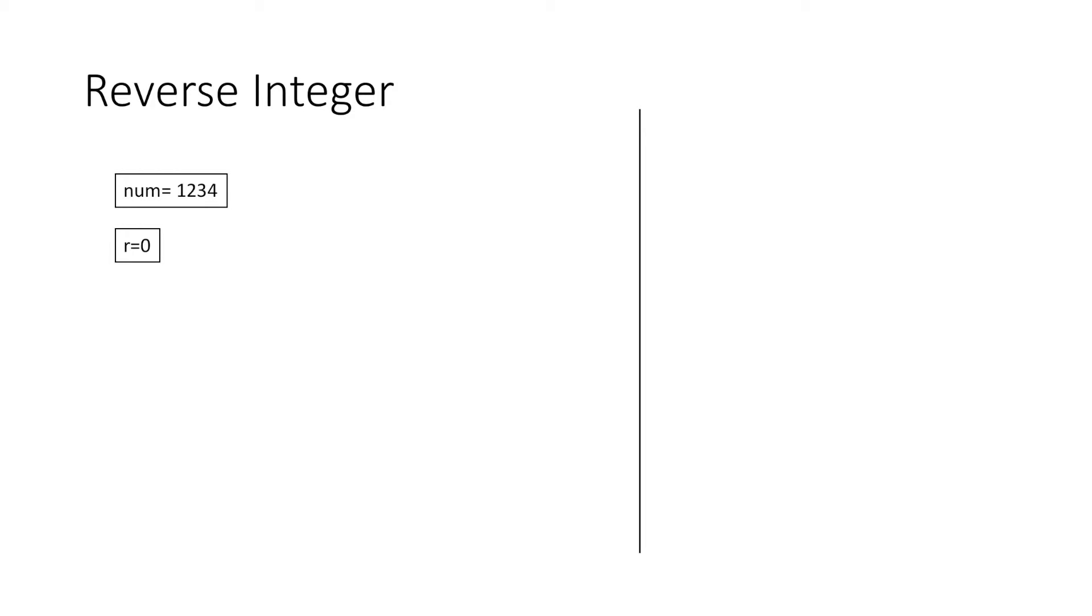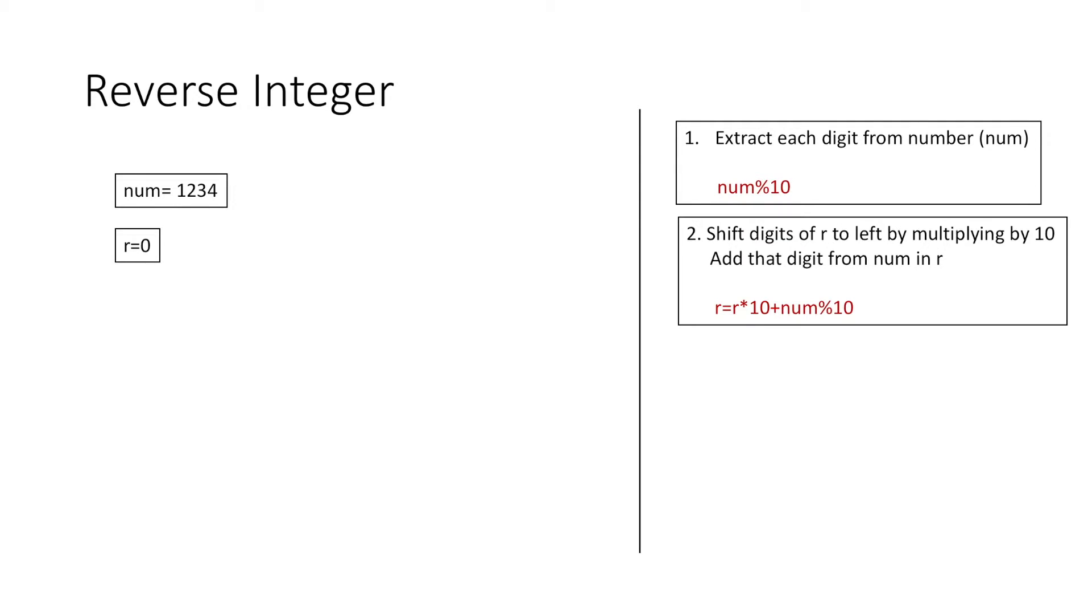Now how we will reverse the integer is: firstly we will extract each digit from the number by taking its modulus with 10. Next we will shift the digits of r to the left by multiplying it with 10, and then we will add the digit from num in r.